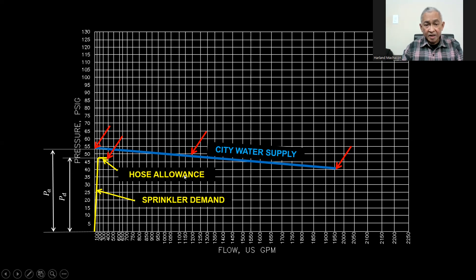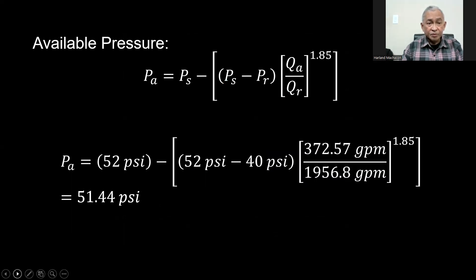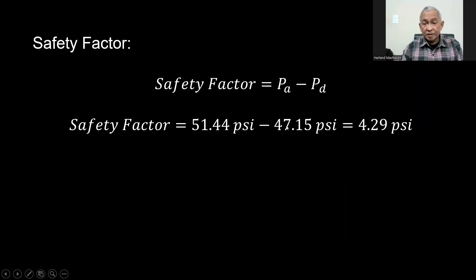We now have the CT water supply plotted, and our task is to compute the safety factor. We know the CT water supply is sufficient to cover the hose and sprinkler requirements. The next step is to compute the available pressure of the CT water at a sprinkler demand of 372.57 GPM. The result using this equation is 51.44 PSI. Subtracting the sprinkler requirement of 47.15 from 51.44, we get a safety factor of 4.29 PSI.